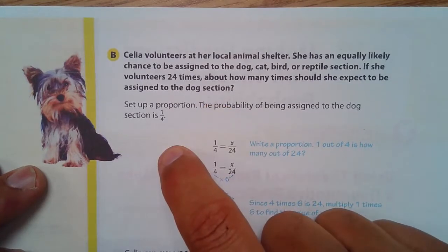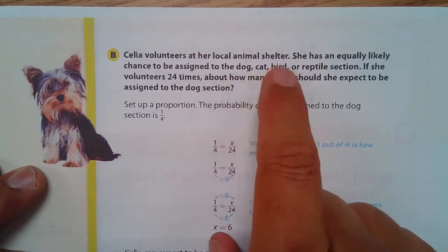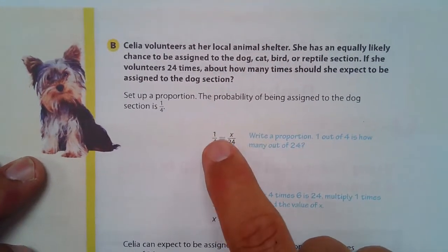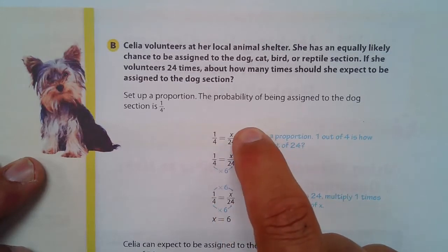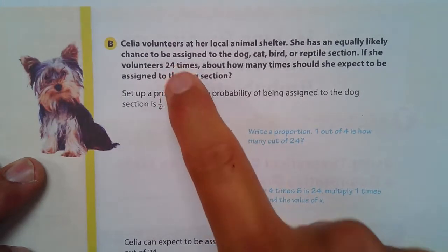Let's set up a proportion. The probability to be assigned a dog section is one out of four because there's one, two, three, four different sections. So there you go. So if it's one out of four, you're expected. So how many times out of the 24 times that she volunteers would it happen? Because 24 is right there.